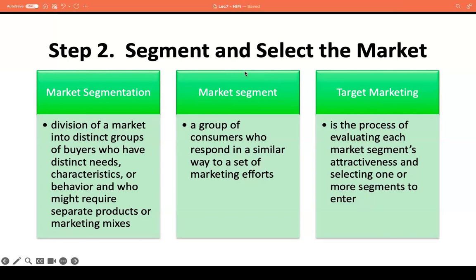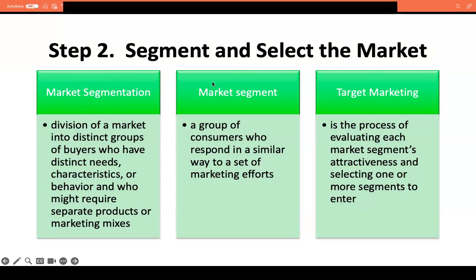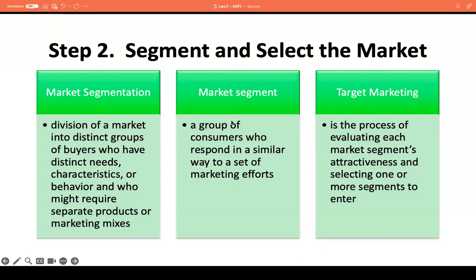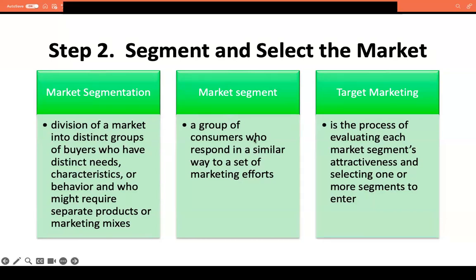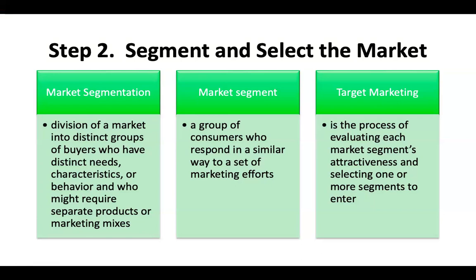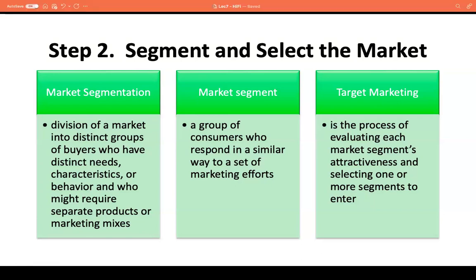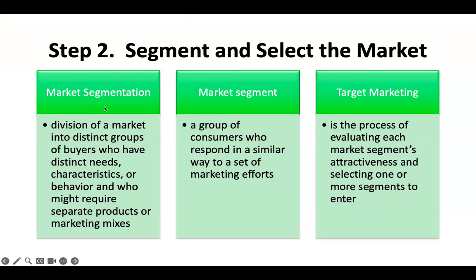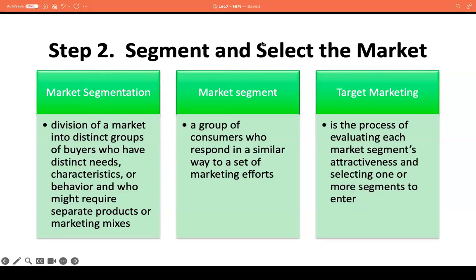So how do we define a market segment? Market segmentation is a strategy or a process, but a market segment, on the other hand, is a group of consumers who respond in a similar way to a set of marketing efforts. In the earlier process of market segmentation, you divided a market into different groups of buyers who have common needs, characteristics, or behavior. After doing that process, what you will have will be the market segments.